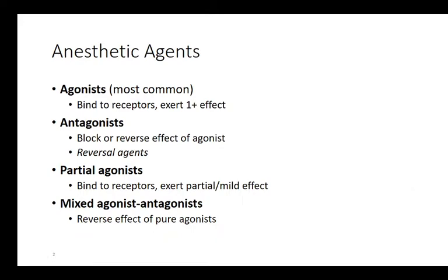The most common anesthetic agents we use are agonists. Agonists are called agonists because they have an additive or normal effect in the body — they bind to receptors that you normally have. Your body has receptors for neurotransmitters, and these receptors will also accept anything that looks like those neurotransmitters. Agonists mimic normal neurotransmitters and are most effective and most commonly used.